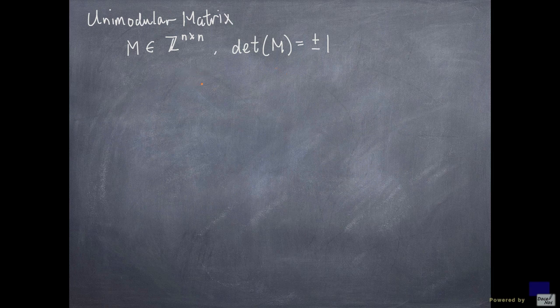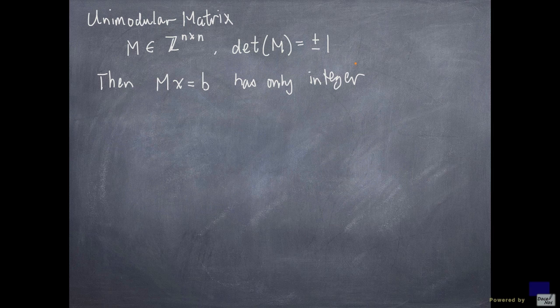So M has to be invertible. One special property is that if you try to solve the system Mx = b, then you only have integer solutions whenever b is an integer vector.